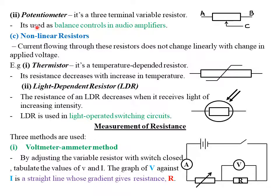Another variable resistor is what we call a potentiometer, which is a three-terminal variable resistor. A rheostat usually has only two terminals, but a three-terminal variable resistor we call a potentiometer. Its application is that it is used as balance controls in audio amplifiers. If you are asked to give an application of a potentiometer, you simply say it is used as balance controls in audio amplifiers. Its circuit symbol is as shown in the diagram.